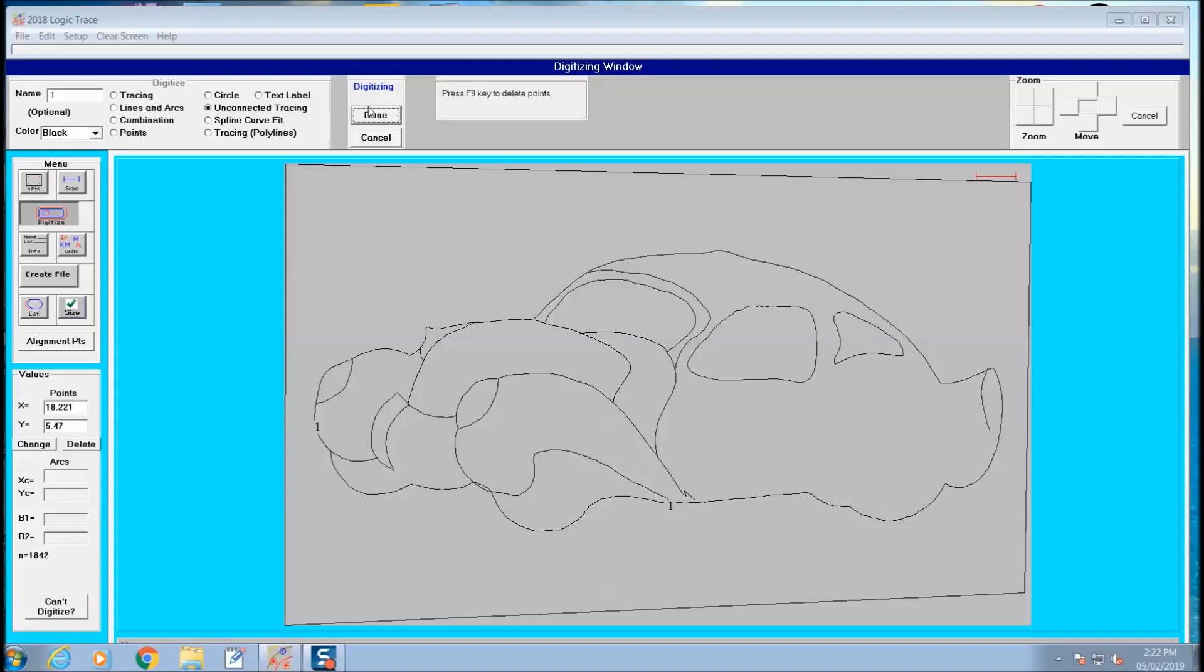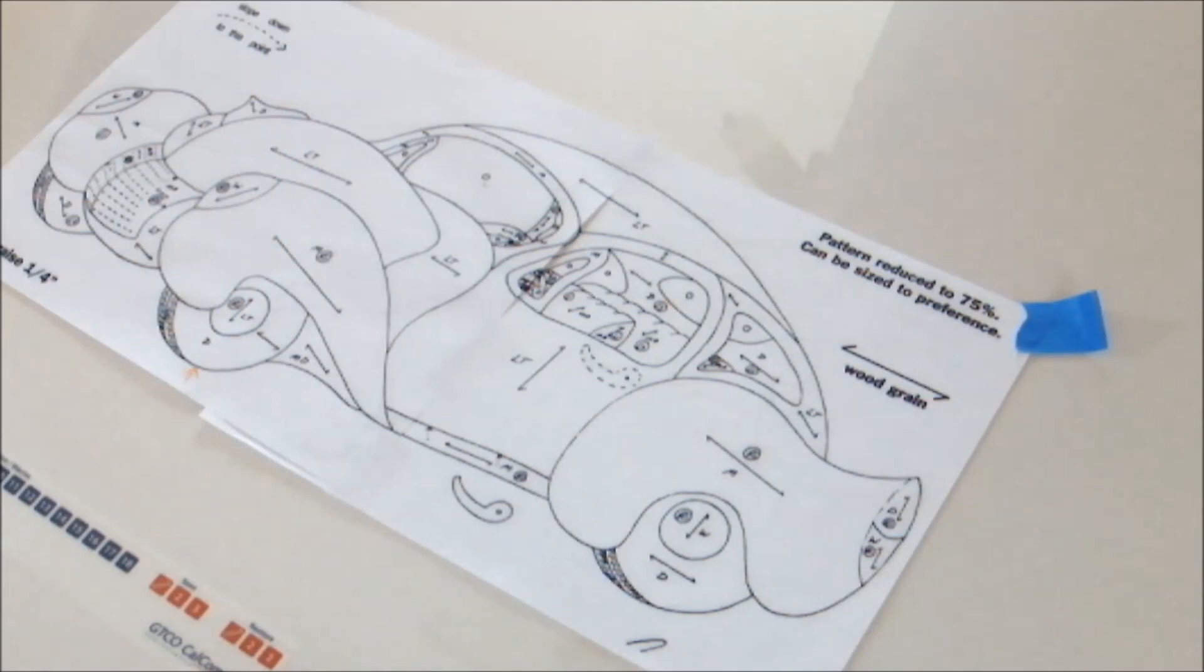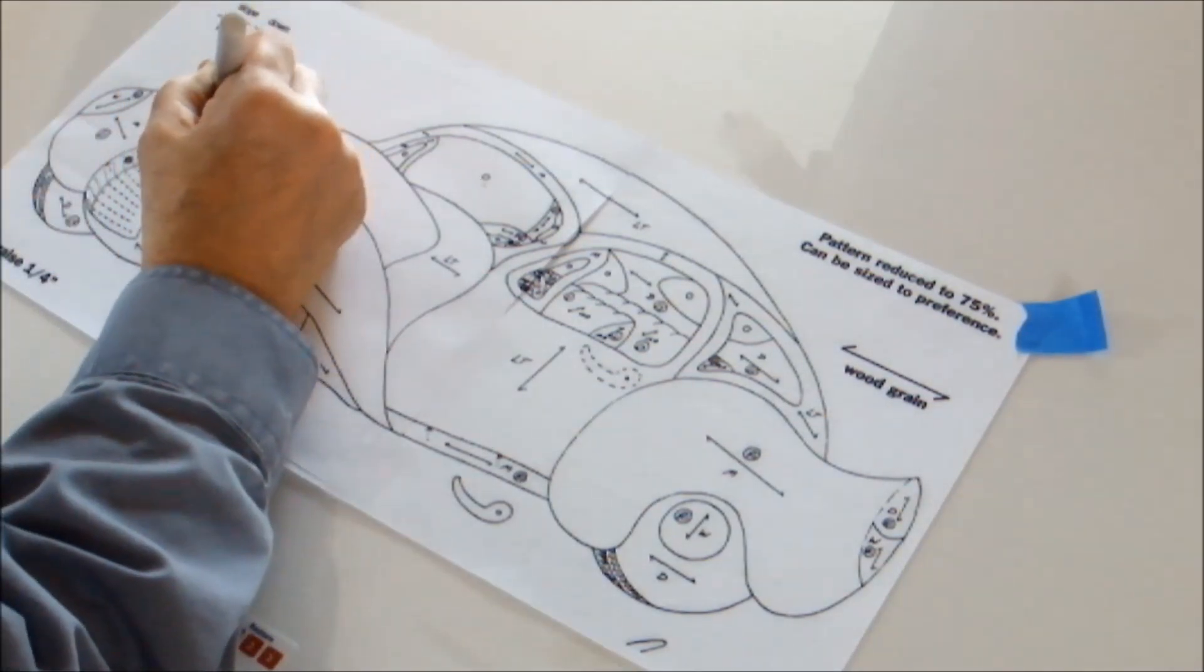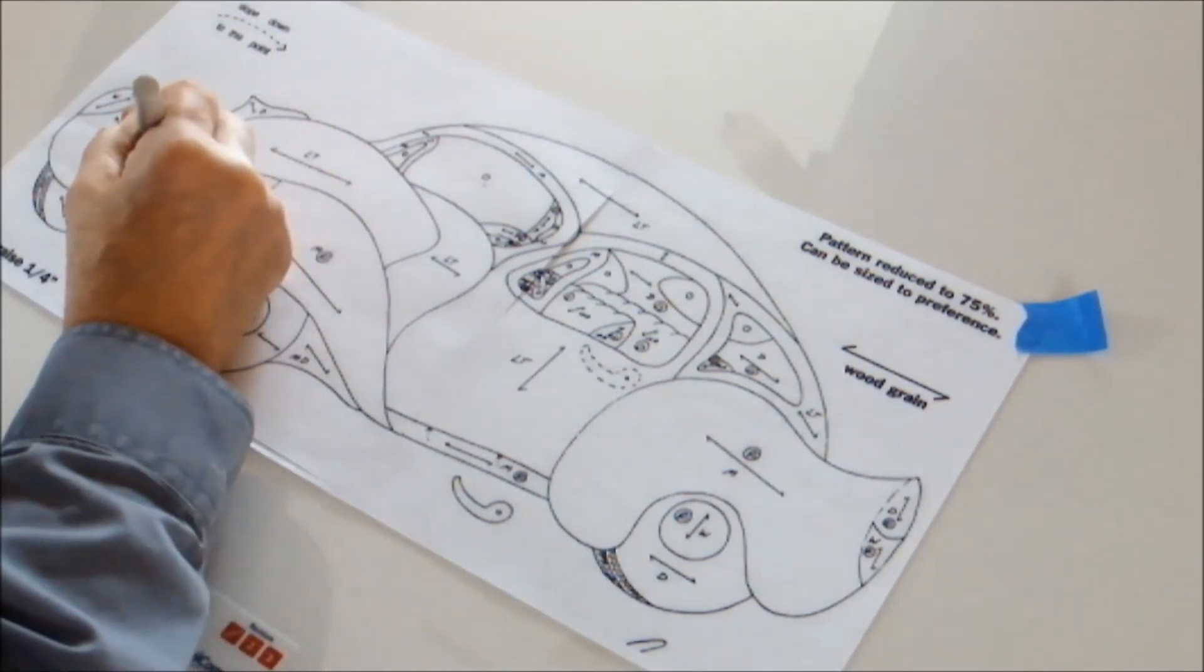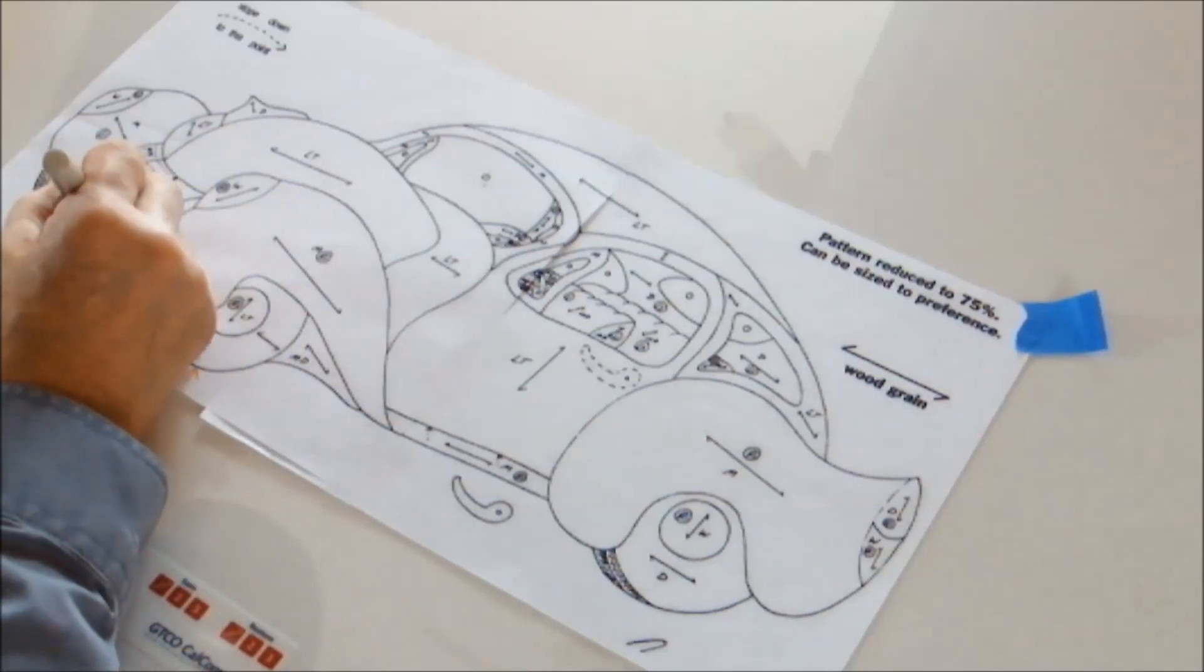This project is going to require some vector editing because I overran a lot of the lines, like I said, because it's easier to overrun them and cut off that little tail than it is to try to extend it with a node editor.